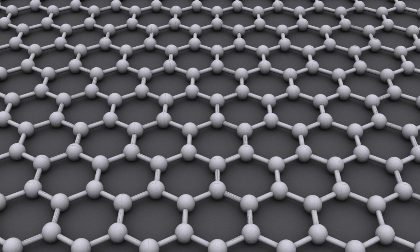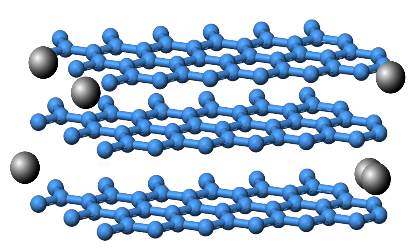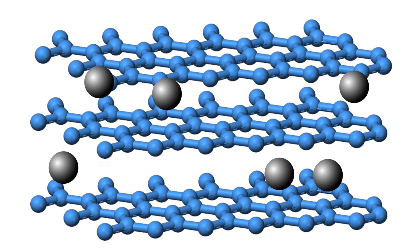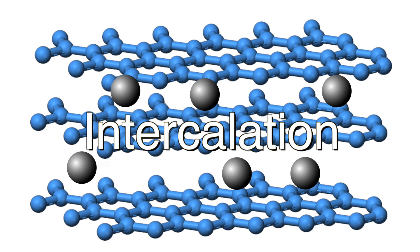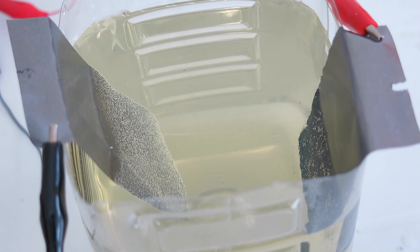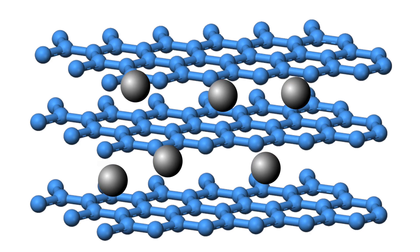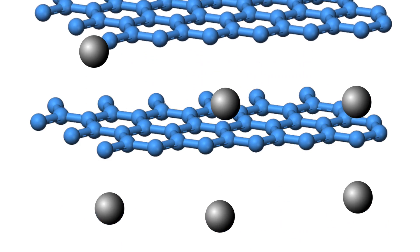Instead of trying to modify the individual layers, which are very chemically stable, instead we can put things between the layers to modify graphite's properties. This process is called intercalation, and we looked at one instance of it in the last graphene video. We used electrolysis to force ions between the layers, but since we were only interested in the graphene, those ions were only used to force the layers apart.